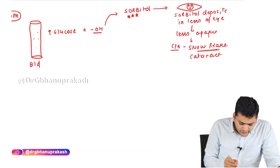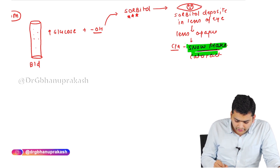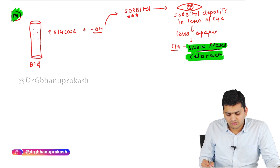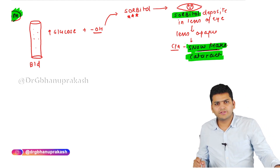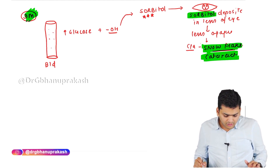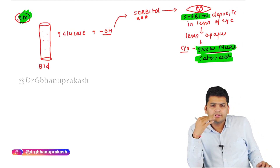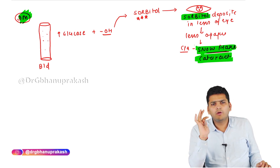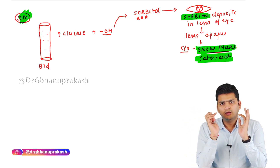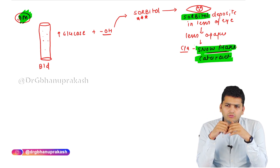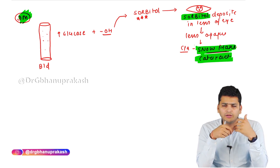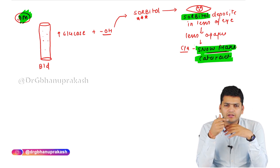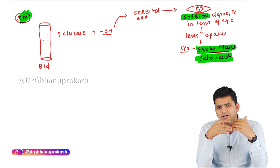The cataract caused by sorbitol accumulation in diabetic patients is called snow-flake cataract. This is so fast it can develop overnight. So if a diabetic person goes to sleep with fine vision and wakes up with blurry vision, they may have developed snow-flake cataract. It is due to sorbitol accumulation, not glucose accumulation.